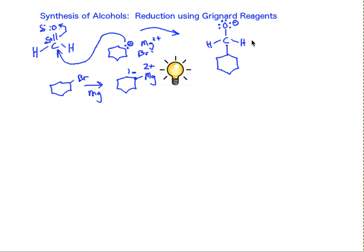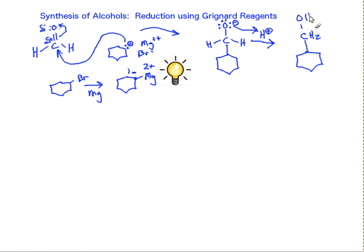So we're sort of done here, like we were with aldehydes and ketones — that alkoxide, in the presence of acid, will become protonated to give CH₂OH, and that's our final product for that reaction. The reaction of a carbonyl-containing compound with a Grignard reagent is still a reduction, because we have fewer carbon-oxygen bonds in our alcohol product than we did in our carbonyl-containing reagent. And it's another way to synthesize alcohols.